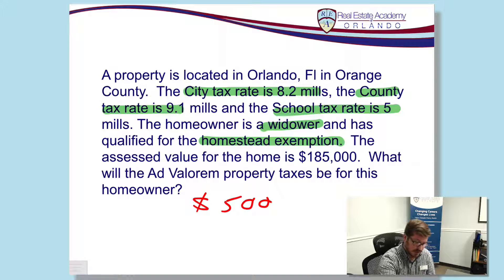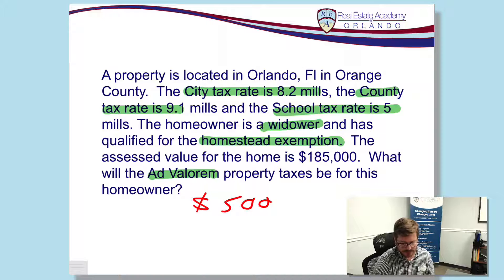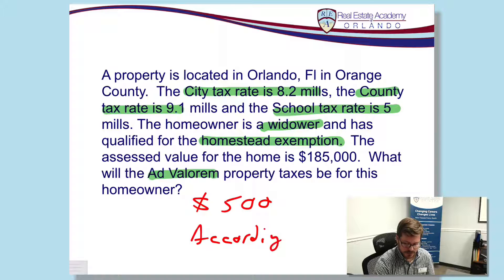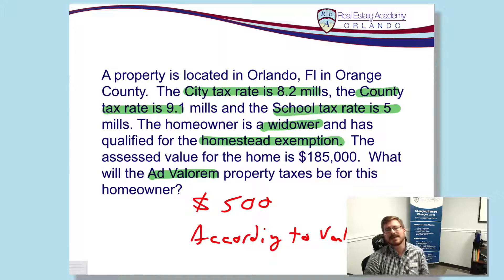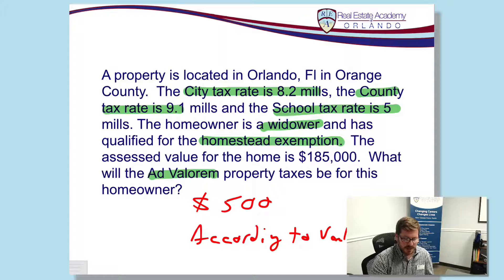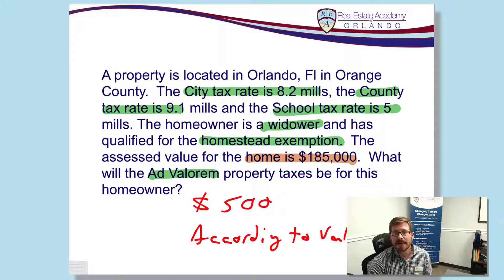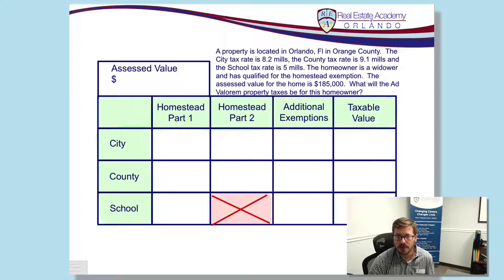We also need to understand the term ad valorem. Ad valorem is just a fancy Latin phrase that basically means according to value. All that really means is the value of the tax is based on the value of the property, which is why we start with our assessed value. That most important number is $185,000. Let's move on and look at how we solve this problem.